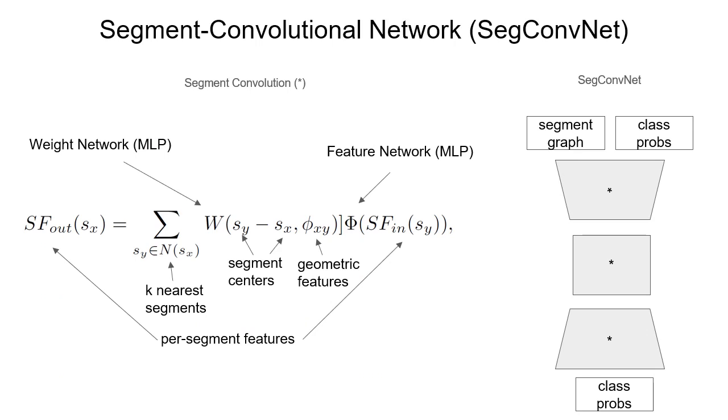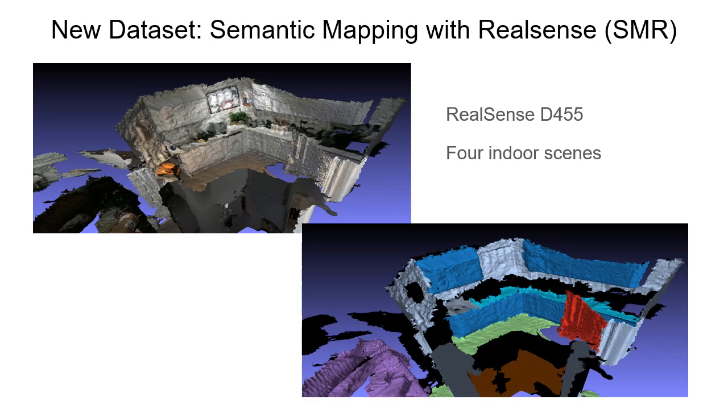We then apply a segment convolutional network to refine the semantic maps further. Inspired by PointConv, our segment convolution uses an MLP to predict the convolution kernel, and another MLP to process the features.